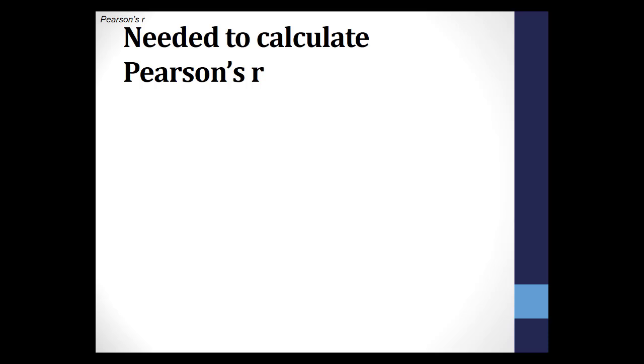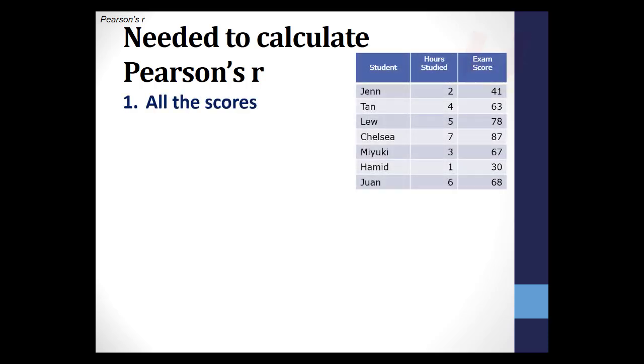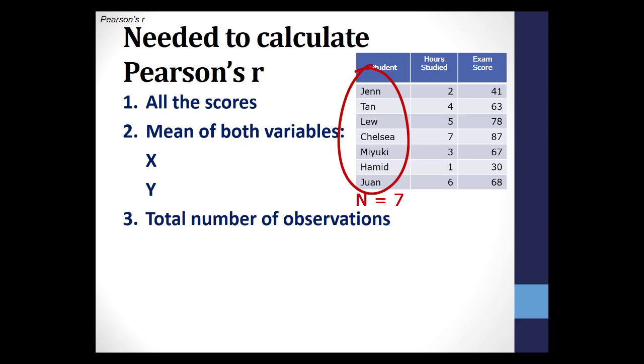For the formula, you need to have all the scores in the data set. That means two sets of scores for each case. With this, you can calculate the mean of both continuous level variables, which would be X and Y, and the total number of observations so that you can calculate degrees of freedom.